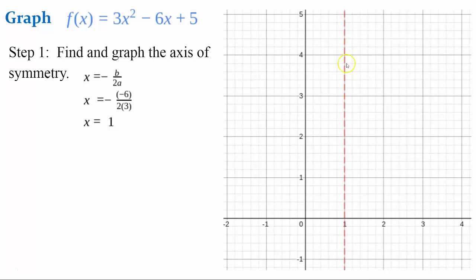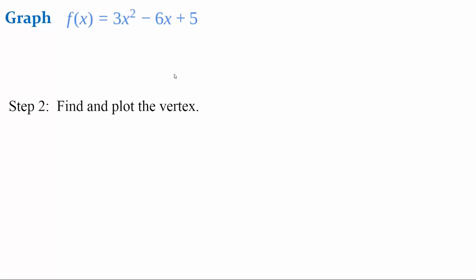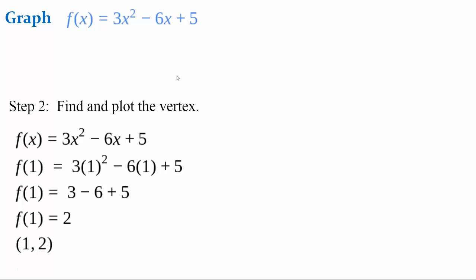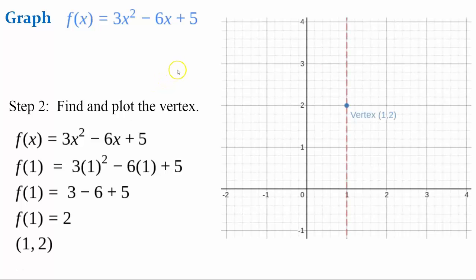Here's a graph of the line x equals 1. Traditionally, the axis of symmetry is drawn as a dashed line. For Step 2, we find and plot the vertex. We evaluate the function at x = 1 (the axis of symmetry value) to find the vertex. The output is 2, so the vertex is (1, 2). We plot that on the graph so it lands on the axis of symmetry.